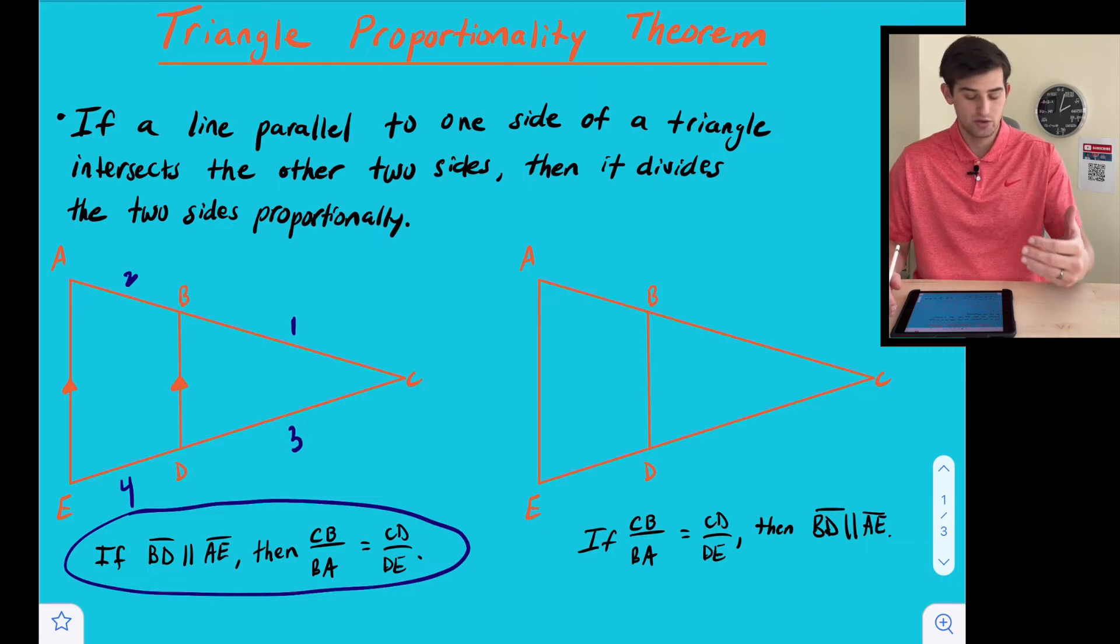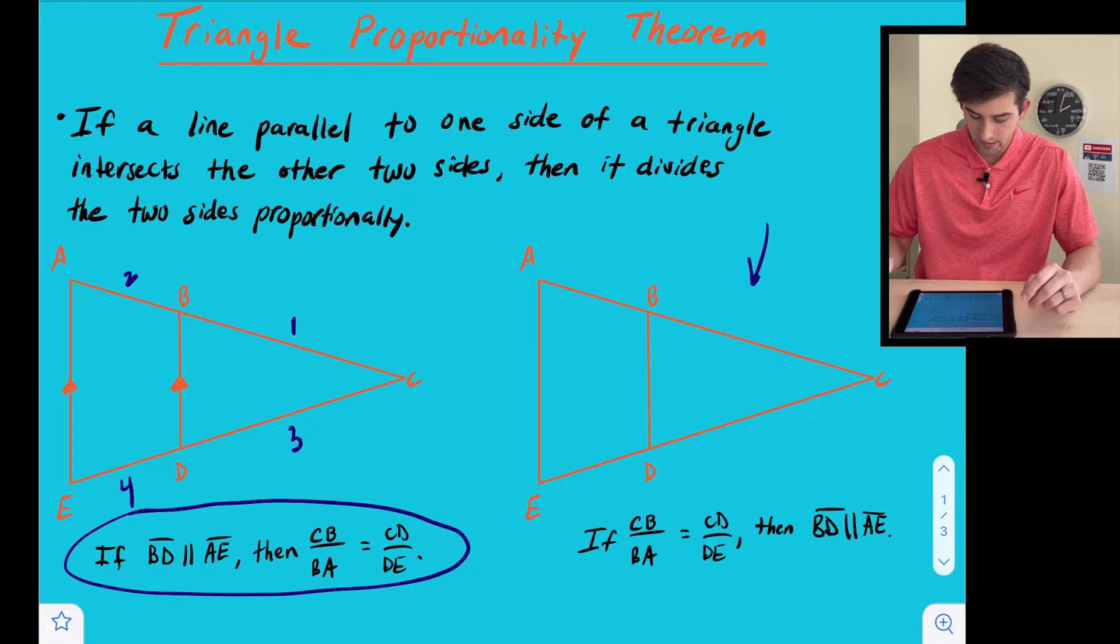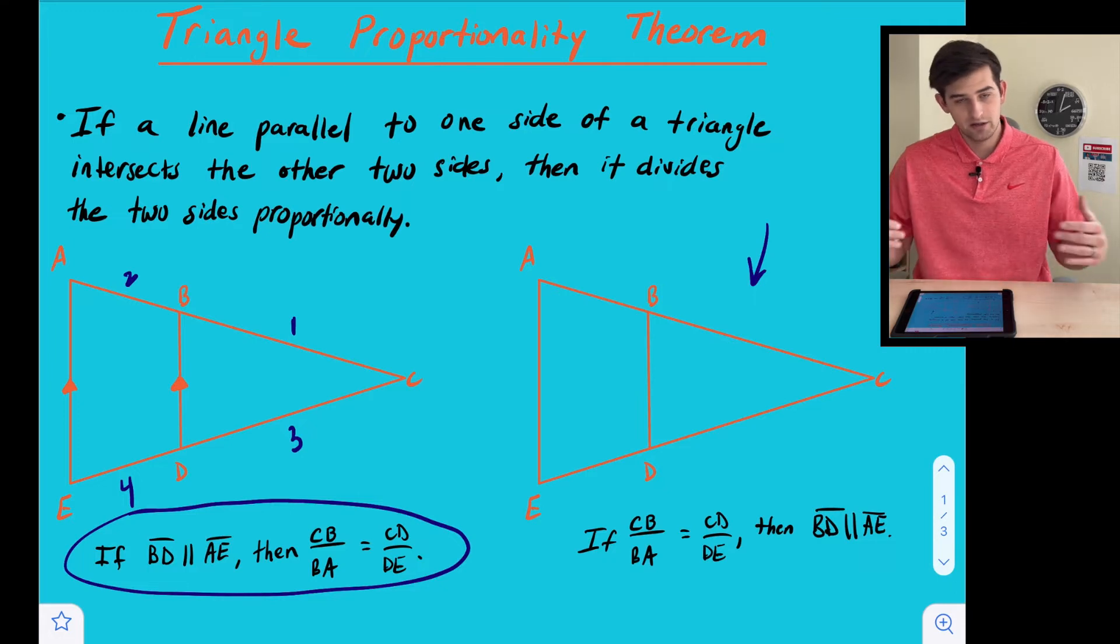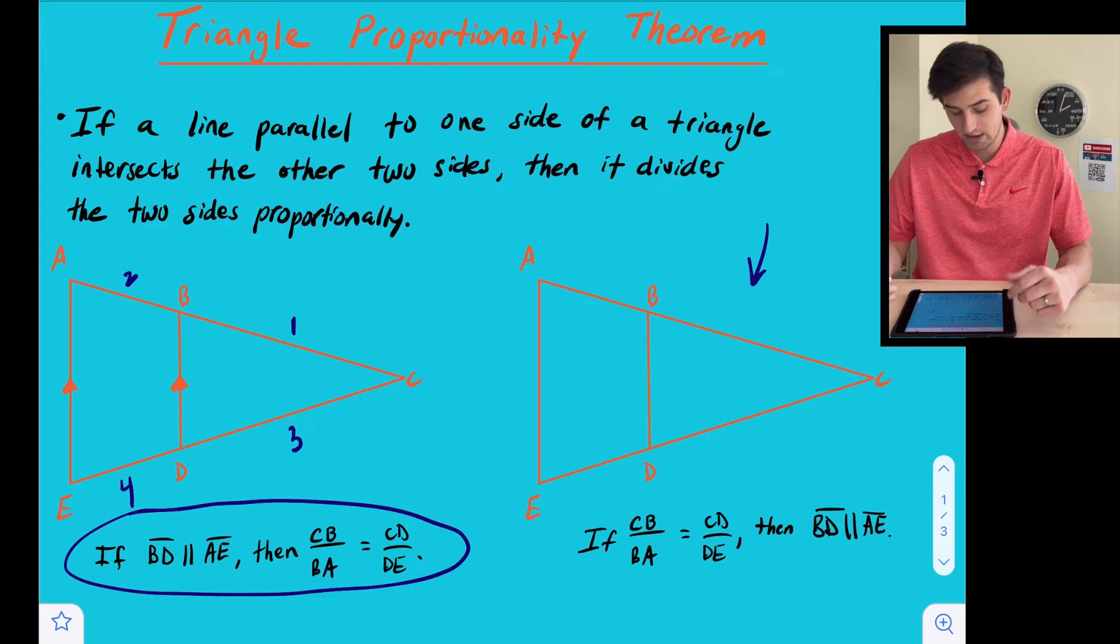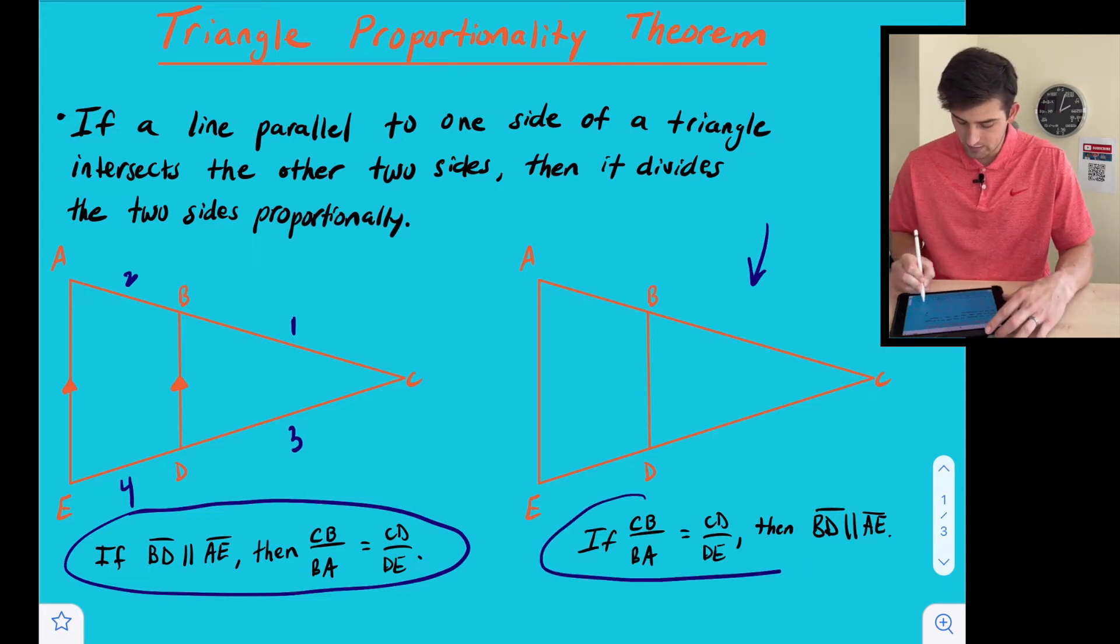And if the lines aren't parallel, like we see at the diagram on the right, then if we have the measures of the sides and we can set up a proportion, and if they are equal to each other, then we can prove that the two sides, or that segment BD is parallel to segment AE, and that's what gives us this if-then statement right here.